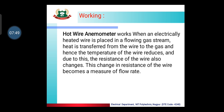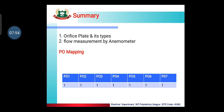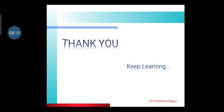This is nothing but flow rate measurement by using a hot wire anemometer. To summarize, our today's topic was orifice plate and its types, and similarly we covered flow measurement using the hot wire anemometer. By this, the following program outcomes are mapped. Thank you and keep learning.